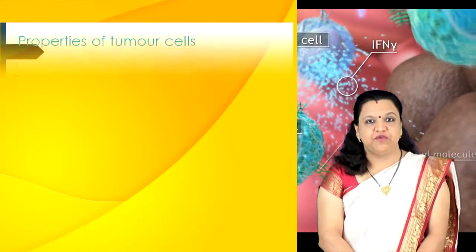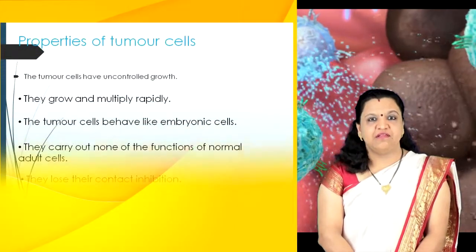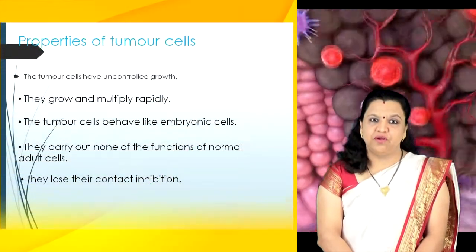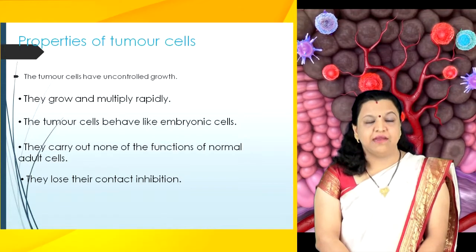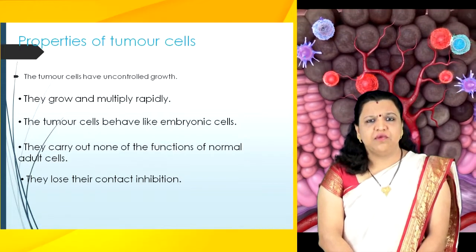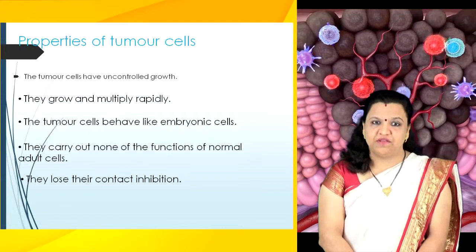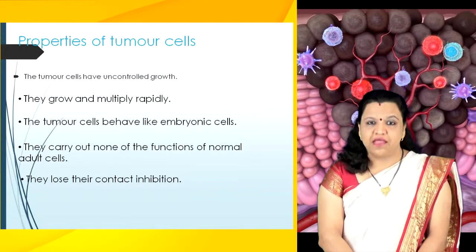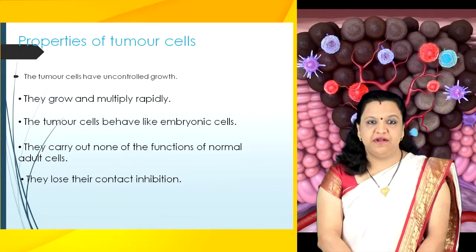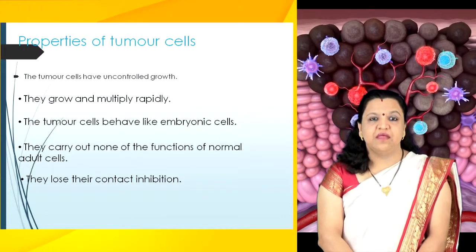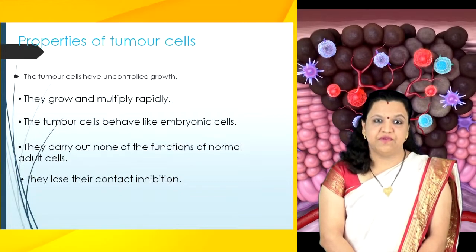There are many properties of tumor cells. Tumor cells have uncontrolled growth — they grow and multiply rapidly. They behave like embryonic cells, carry out none of the functions of normal adult cells, and they lose their contact inhibition.